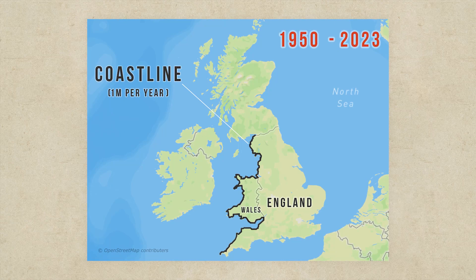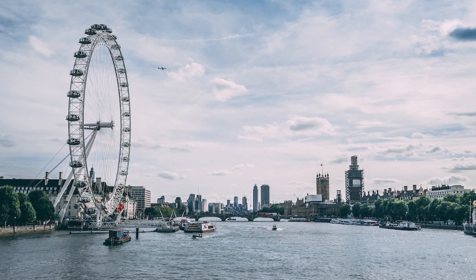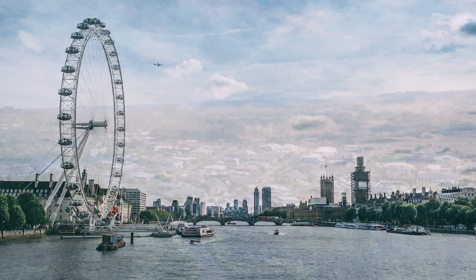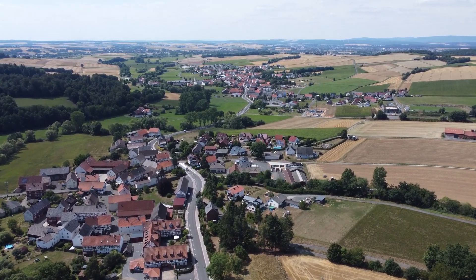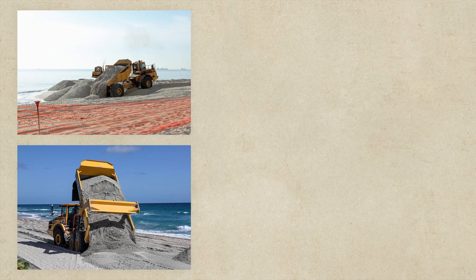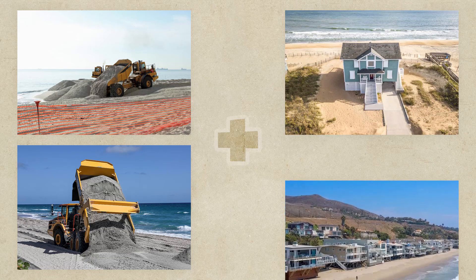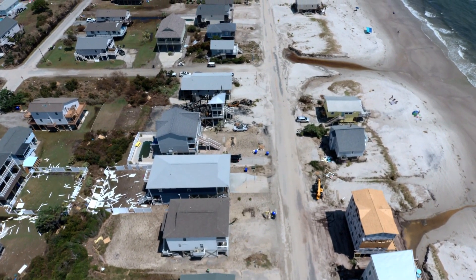In addition to sea level rise, other factors such as increased storm activity and human activity such as dredging also play a role in coastal erosion. The effects of coastal erosion are far-reaching and can be devastating to local communities — as land is lost to the sea, homes and businesses can be destroyed or damaged, and valuable wildlife habitats can be lost. Infrastructure such as roads and railways can also be damaged or destroyed by waves or floods. The British government has introduced measures including beach nourishment schemes, which involve adding sand to beaches to protect them from waves. However, some areas may require more drastic measures such as managed retreat, where people in vulnerable areas are moved away from the coast.